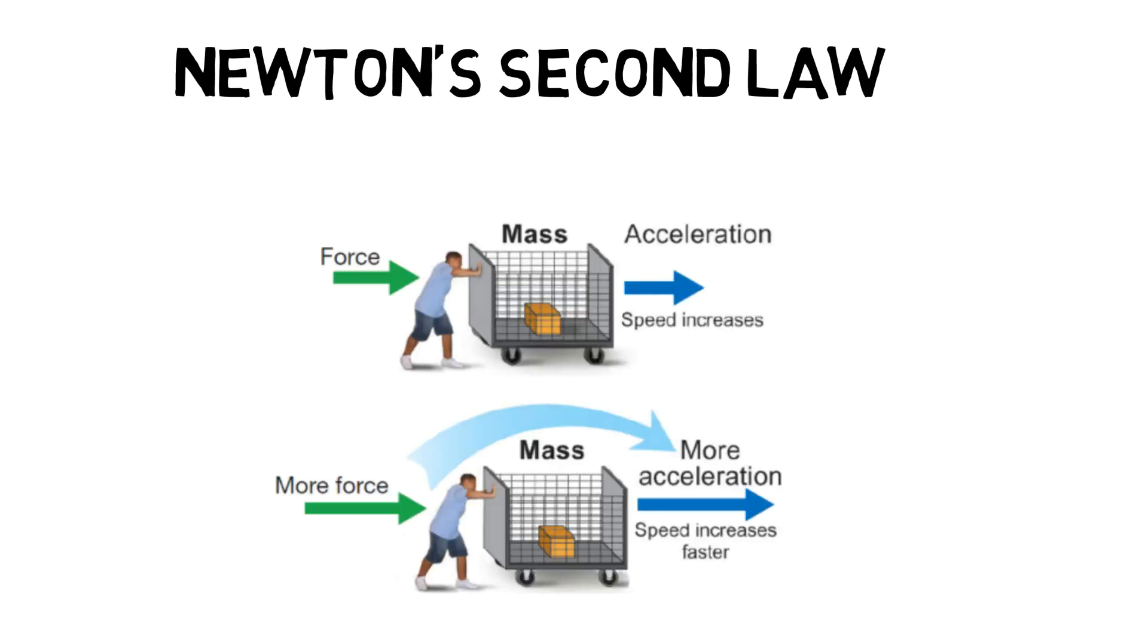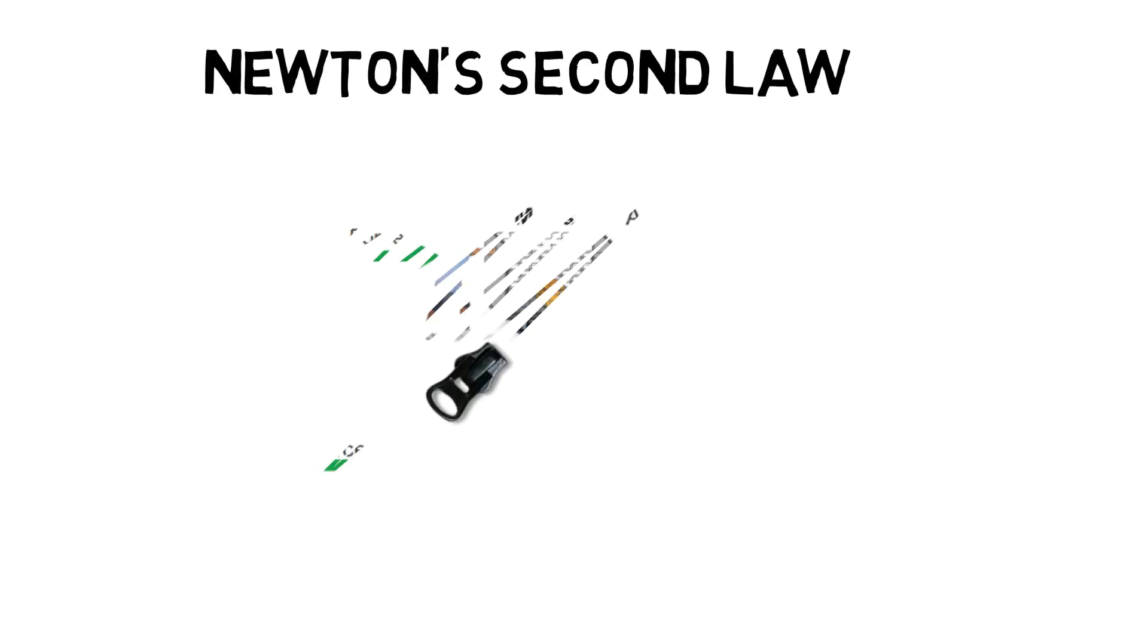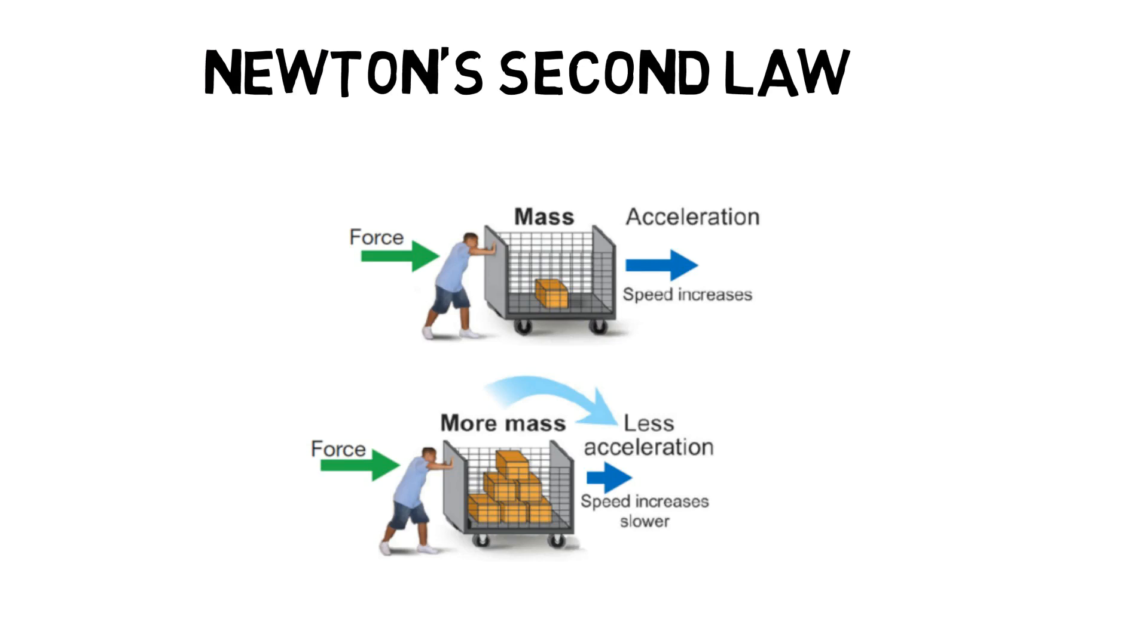The second law helps in interpreting the amount of energy needed to move an object. The law states that whenever a force acts on a particular object, the object will accelerate in the direction of the force. As long as the mass of an object is constant, increasing the force exerted onto it will also increase its acceleration. If you apply the same amount of force on more mass or weight, you get less acceleration.